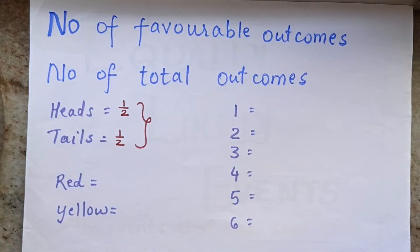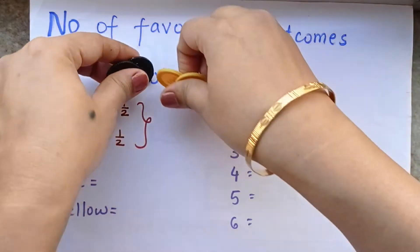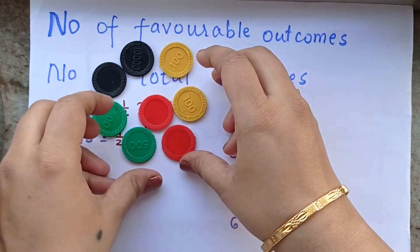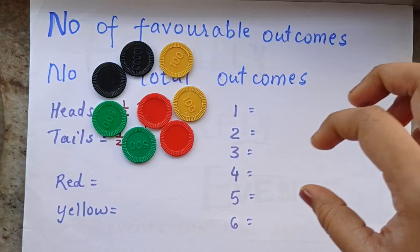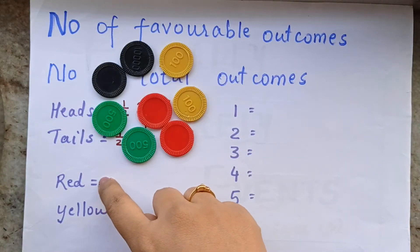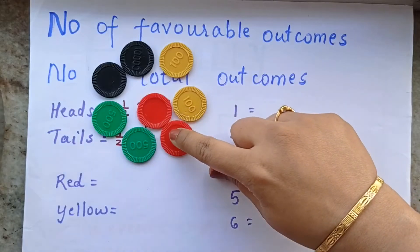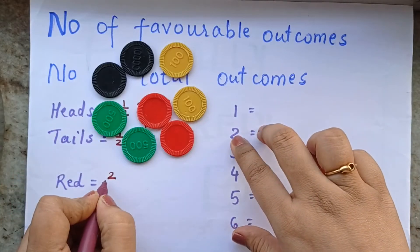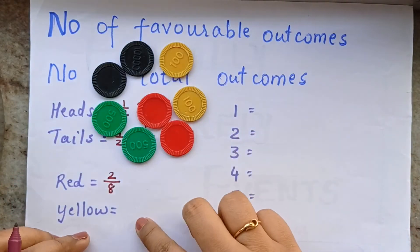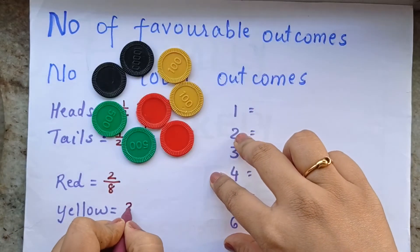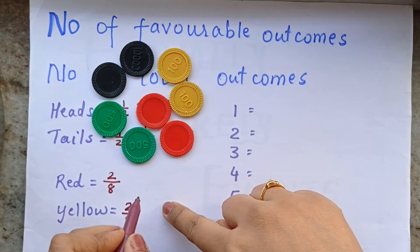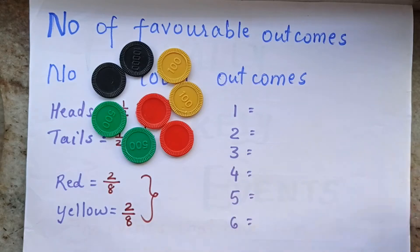Another example is these tokens. I have 2 black, 2 yellow, 2 red, and 2 green tokens. The probability of getting a red is 2 out of 8. The same for yellow — 2 out of 8. Since red and yellow both have the same probability, these two events are called equally likely events.